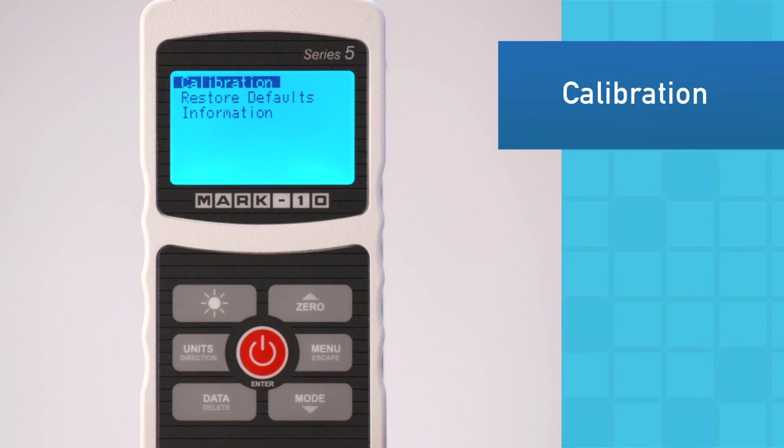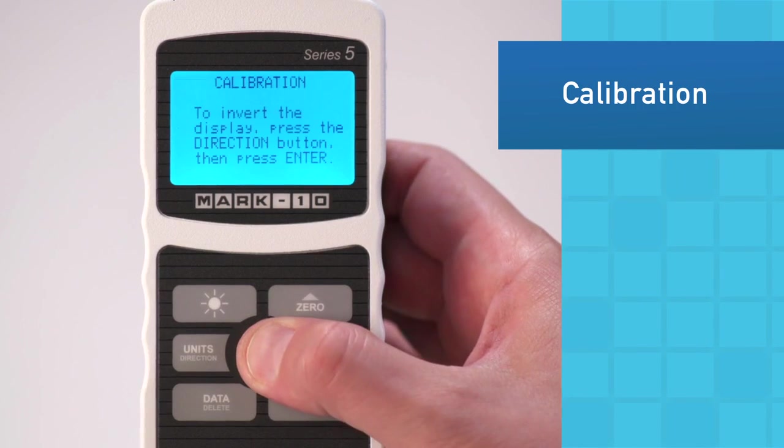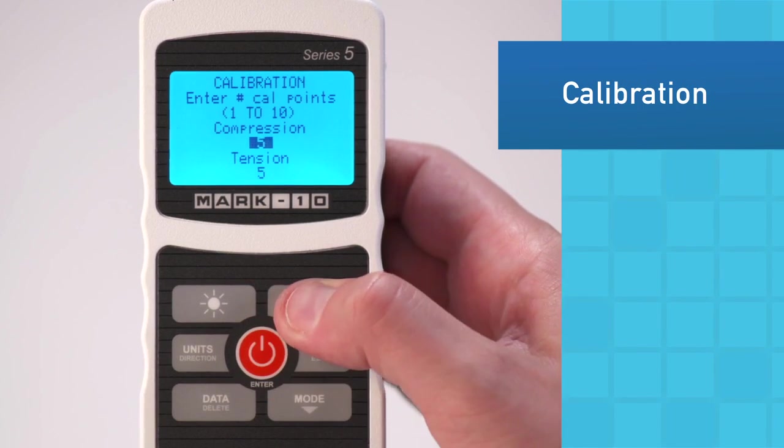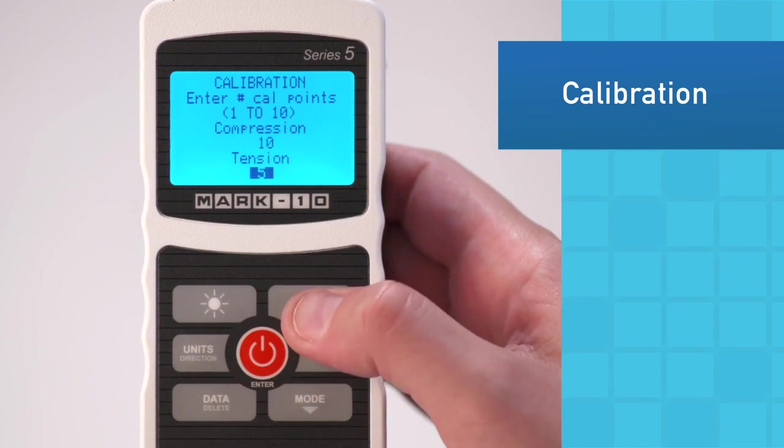Calibration is easily done utilizing dead weights or reference load cells. The user may select up to 10 data points in each measuring direction and may specify the exact weights of each data point in any supported unit of measurement.